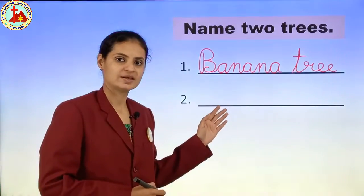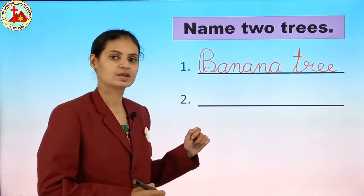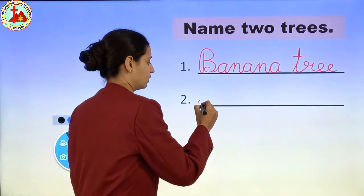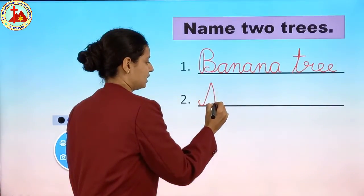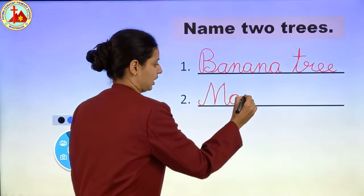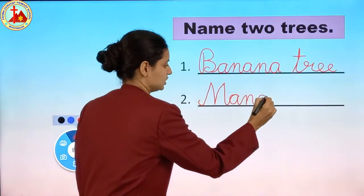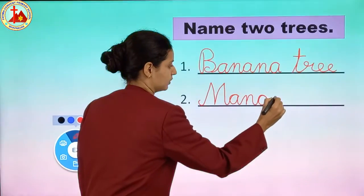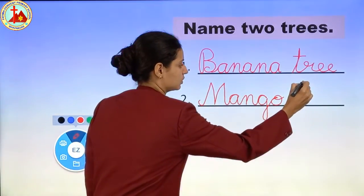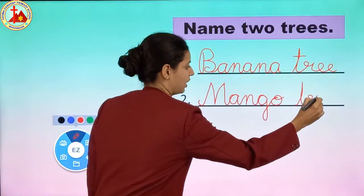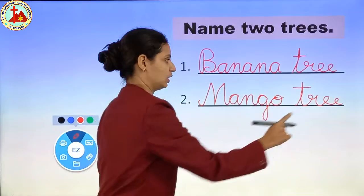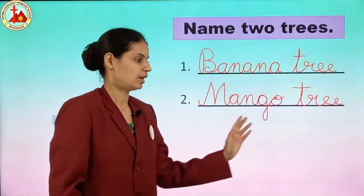The next name I am going to write is mango tree. Let us write the spelling of mango: cursive capital M, A, N, G, O. Mango. T, R, double E. Tree. Mango tree. Banana tree. Mango tree.